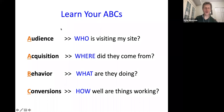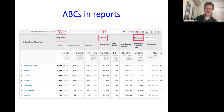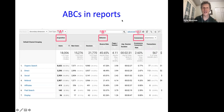These also map to the high-level questions we want to know: in the Audience report, we find out who is visiting my site; Acquisition is where did they come from, what traffic sources; Behavior is what are they doing; and Conversions is how well are things working. You'll see these ABCs showing up everywhere — in every traffic report, the first three columns are Acquisition metrics, the next three are Behavior, and then Conversions.